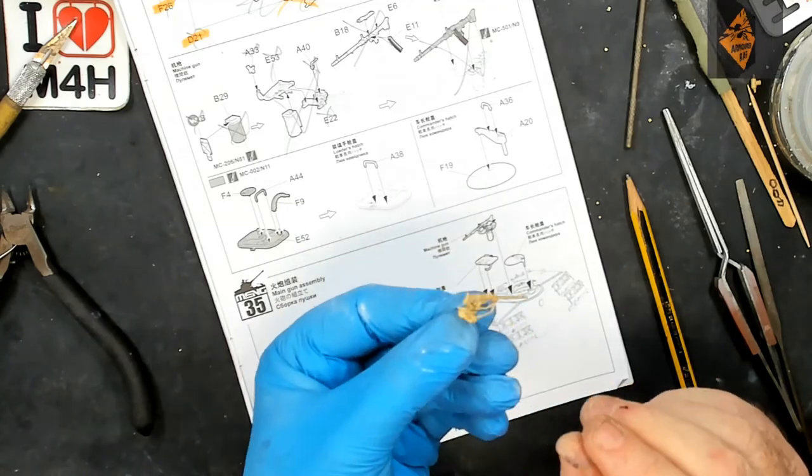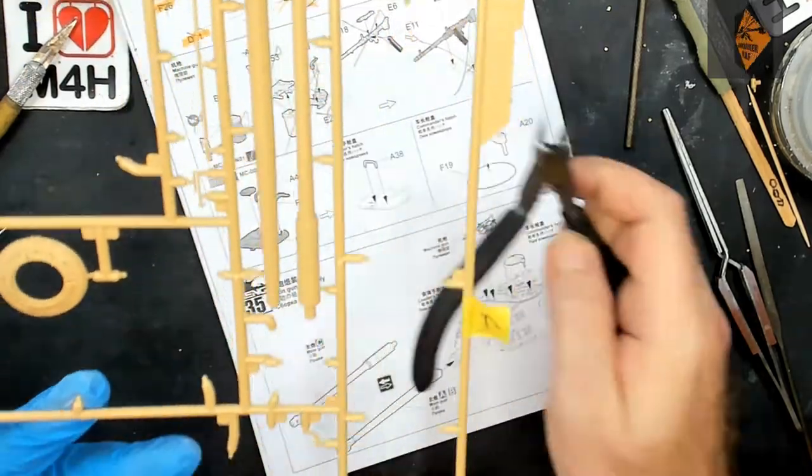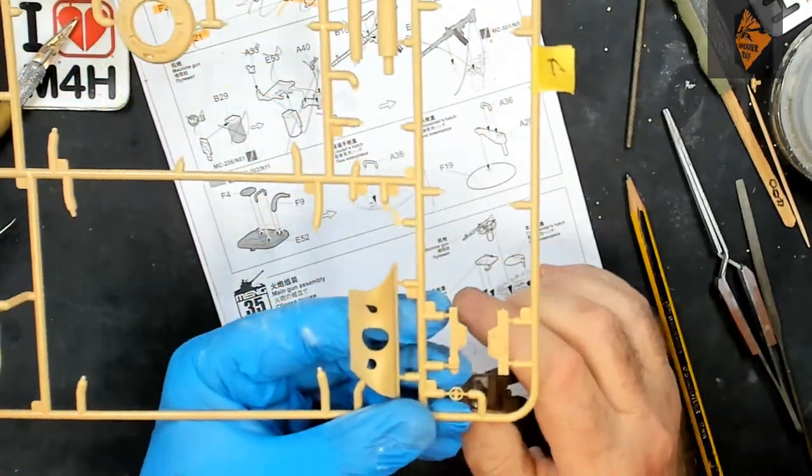Okay, that's the MG34 done. Let's pop that to one side and allow it to dry. Now, to move on to the door for the top of the turret. So, let's crack on with that.